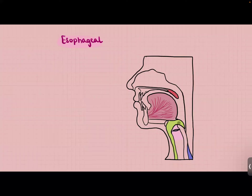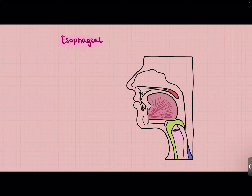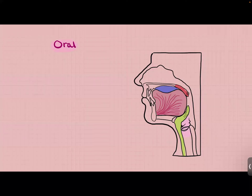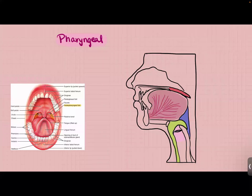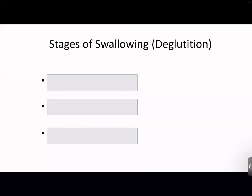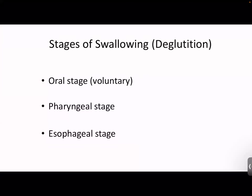The esophageal stage is also involuntary. The upper esophageal sphincter relaxes and the pharynx contracts so the food enters the esophagus. This phase is just the food going down to the esophagus. So the three stages of swallowing are: oral (voluntary/buccal), pharyngeal, and esophageal. Deglutition is just another word for swallowing — mastication is chewing and deglutition is swallowing.